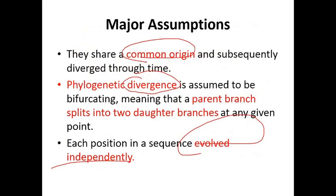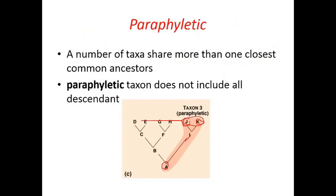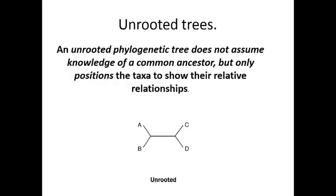Let me revise the phylogenetic terminology. First is taxa — jo present condition mein individual hote hain. Second is branching — wo group kitne ek doosre ke andar bifurcate ho rahe hain. Jab ek jagah se split hote hain to usko node kaha jata hai. Jahan se start hote hain usko root kaha jata hai. These are the key terms: rooted tree, unrooted tree, monophyletic, paraphyletic.